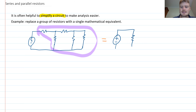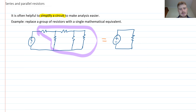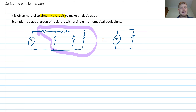For instance, if we had just a power supply and a single resistor, that would be much easier to analyze. So what's the process we can use if you've got a big network of resistors to turn them into a simplified equivalent? That's what we're looking at in this video.